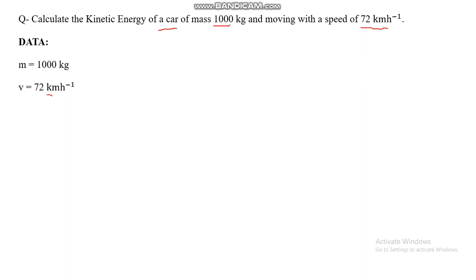The SI unit of velocity is meter per second. To convert km/h to m/s, multiply by 1000 and divide by 3600. So 72 km/h multiplied by 1000 divided by 3600 gives the velocity in meters per second, which equals 20 m/s.